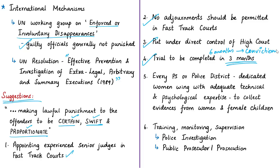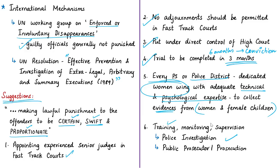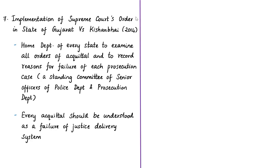Additional suggestions include: every police station or district should have a dedicated women's wing trained with adequate technical and psychological expertise — including psychiatrists and trained psychologists — to collect sensitive evidence from women and female children. Police must be trained to take such issues seriously and complete investigations timely and efficiently. Public prosecutors must also be properly trained, monitored, and supervised to ensure offenders are punished.